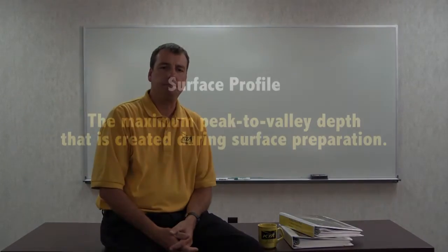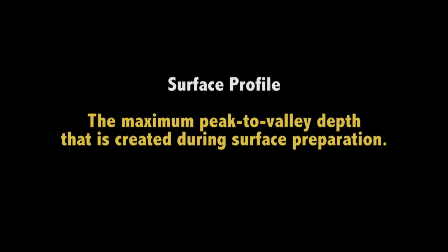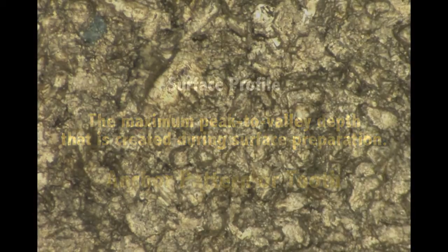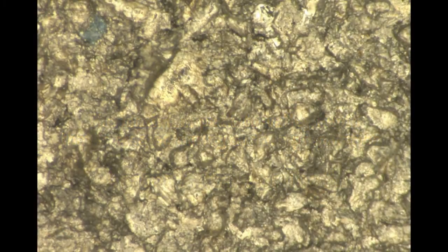That is why project specifications often require you to not only clean the surface but to roughen it as well. Surface profile is defined as the maximum peak-to-valley depth created during surface preparation, also referred to as anchor pattern or tooth. When observed underneath high magnification, it appears as a mountain range — a series of peaks and valleys in the surface of the steel.